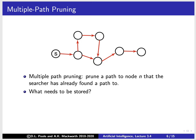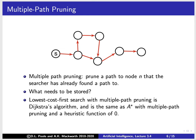What do we need to store? All we need to store is the nodes that we've already expanded — meaning we've selected them from the frontier and already checked if they're a goal or found their neighbors. It turns out that lowest-cost-first search with multiple path pruning is Dijkstra's algorithm. It's the same as A* with multiple path pruning and a heuristic function of zero. Since h=0 is still an admissible underestimate, we can almost always do better than Dijkstra's algorithm if we have extra information — for example, Google Maps uses A* because it can estimate the distance from a node to the goal.